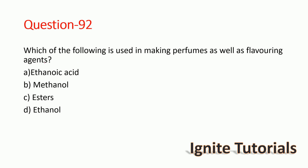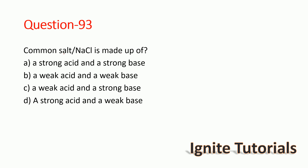Question 91: Which of the following is used in making perfumes as well as flavouring agents? The correct answer is esters — esters are used in making perfumes and flavouring agents. Note: ethanol is used in tincture iodine, cough syrups, and tonics, but for perfumes and fragrances, esters is the correct answer.